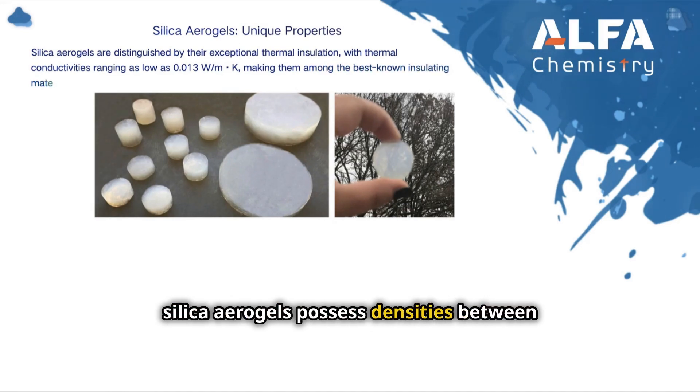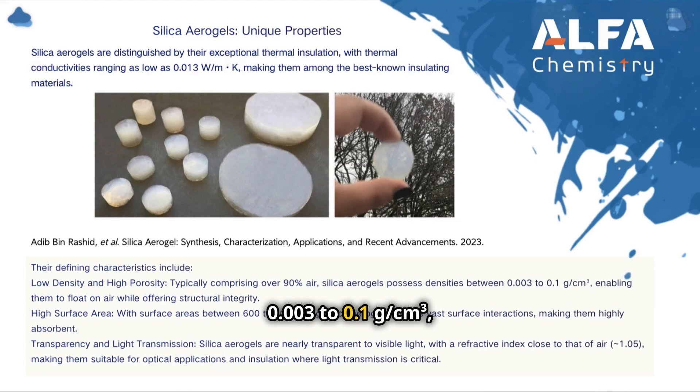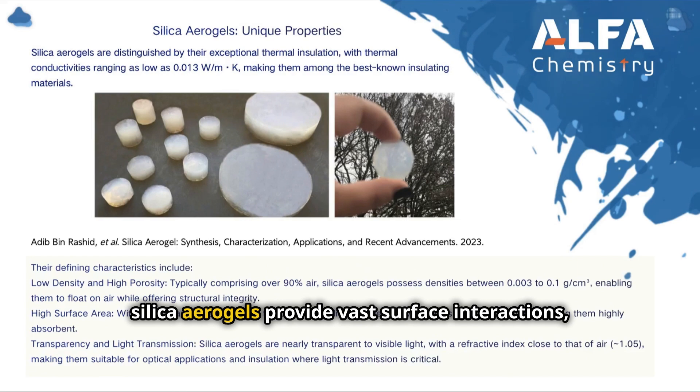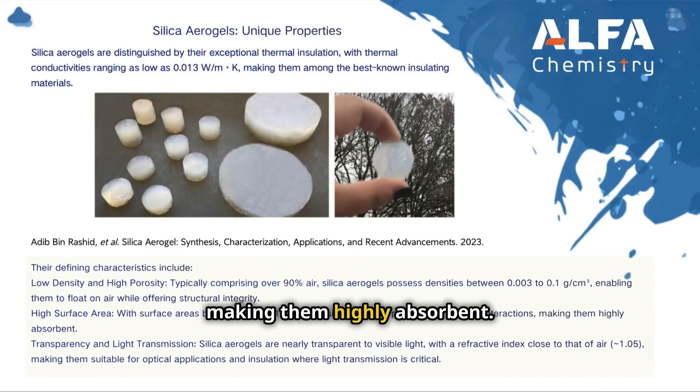Typically comprising over 90% air, silica aerogels possess densities between 0.003 to 0.1 grams per cubic centimeter, enabling them to float on air while offering structural integrity. With surface areas between 600 to 1000 square meters per gram, silica aerogels provide vast surface interactions, making them highly absorbent.